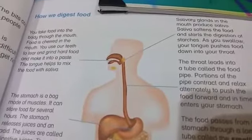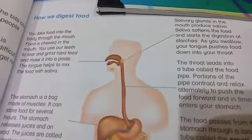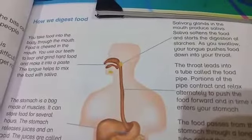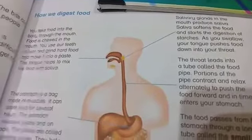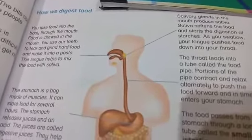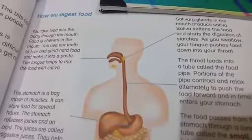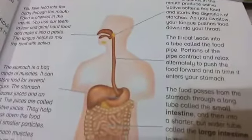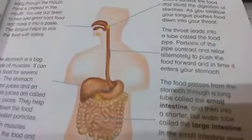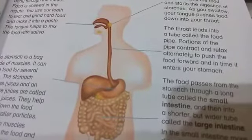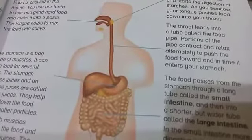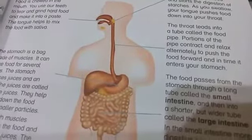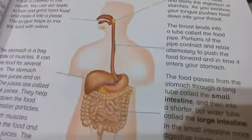This saliva, being liquid, helps to soften the food and it also digests the starches present in the food. After the food is softened, the tongue helps to push the food down into the food pipe. The food pipe muscles contract and relax alternatively and send the food to the stomach.